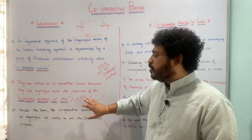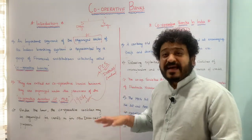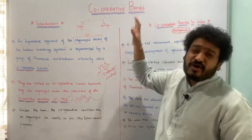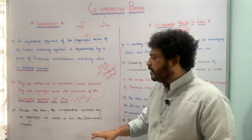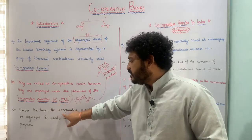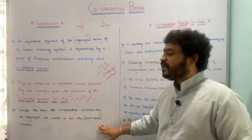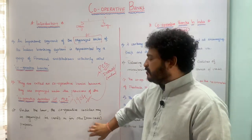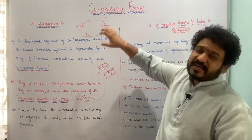There's another important aspect: cooperative societies can be for both credit purposes as well as non-credit purposes. When talking about cooperative banks, we are talking about those cooperative societies — or credit societies — which are dealing with credit. Under the Cooperative Societies Act 1912, cooperative societies may be organized for credit or for other non-credit purposes. Those specially designed for credit purposes are treated as cooperative banks in India.